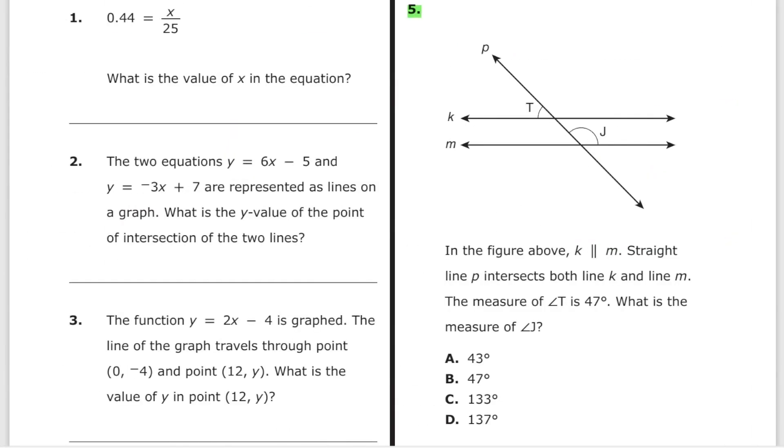Problem number 5. In the figure above, k is parallel to m. Straight line p intersects. The measure of angle t is 47 degrees. So this is 47 right here. Now what is the value of angle j? Goes like this. We know that this angle j here is the same as this angle here because this is a corresponding angle. So all we have to do is find this angle which is 180 degrees minus 47 degrees which is 133 degrees and the answer is C.